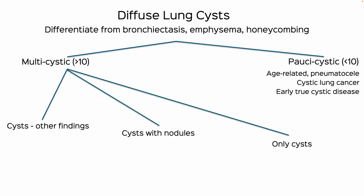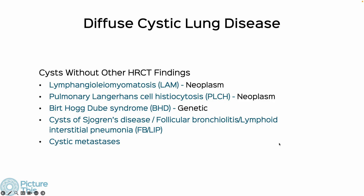The cysts should be more than 10, and when they are, we try and see whether it is only cystic disease with otherwise normal intervening lung, or whether there are cysts with nodules — nodules within or nodules that have become cystic — or cysts with other findings. If you have only cysts, the differential is reasonably limited.